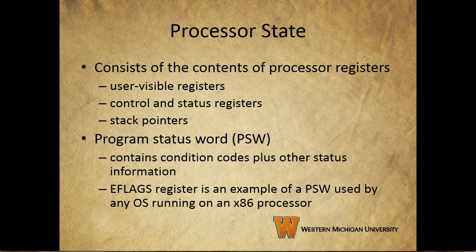Processor state information consists of the contents of processor registers. While the process is running, the information is in the registers themselves. When it's interrupted, all of this register information has to be saved so that it can be restored when the process resumes execution. The nature and number of registers involved depends on the design of the processor. Typically, the register set will include user visible registers, control and status registers, and stack pointers.